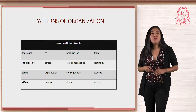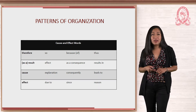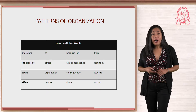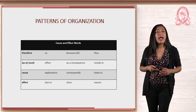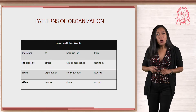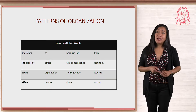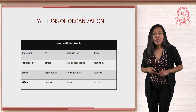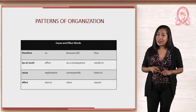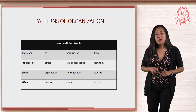Here are some common cause and effect words that Langan presents in his textbook, 10 Steps to Building College Reading Skills. Let's read them: therefore, result or as a result, cause, effect, so, explanation, due to, because or because of, as a consequence, consequently, since, thus, results in, leads to, and reason.